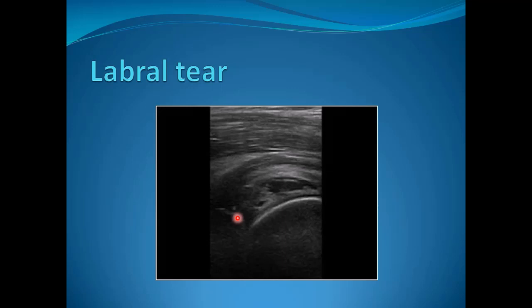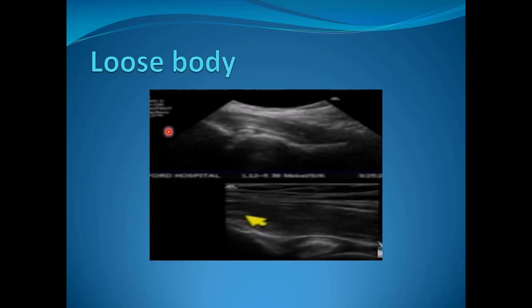This is an example of a joint showing some effusion where we can assess the labrum — we notice a small labral tear. Loose bodies can also be seen by ultrasound in the joint.